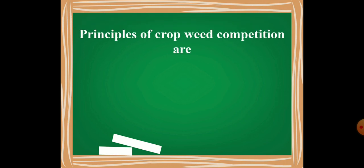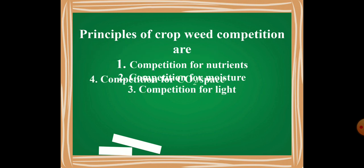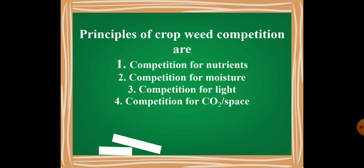If we look at the principles of crop weed competition, then basically we have 4 categories: competition for nutrients, competition for moisture, competition for light, and competition for carbon dioxide and space. So the crop and weeds can compete with which parameters — nutrients, moisture, light, gases, and space.